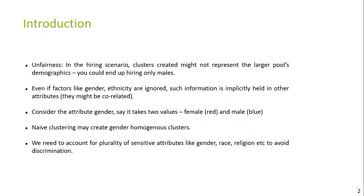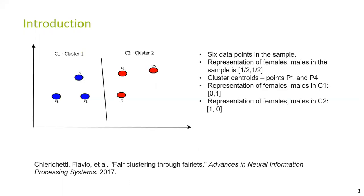For example, in the hiring scenario, clusters created might not represent the larger pool's demographics. You could end up hiring only males or only females. Even if factors like gender are ignored, such information is implicitly held in other attributes. Consider a set of points given in the figure where all the blue points indicate male candidates and red points indicate female candidates.